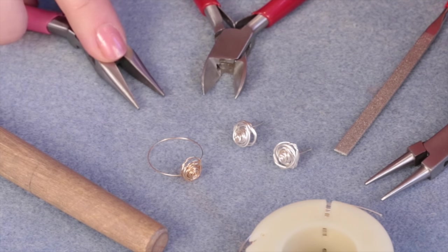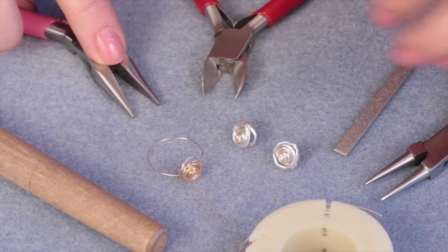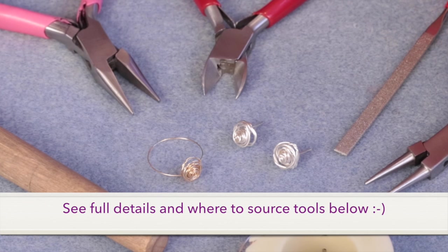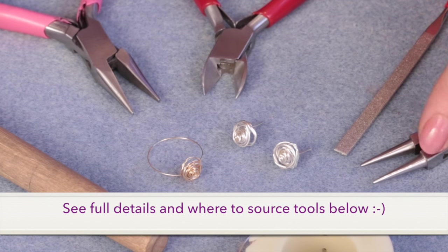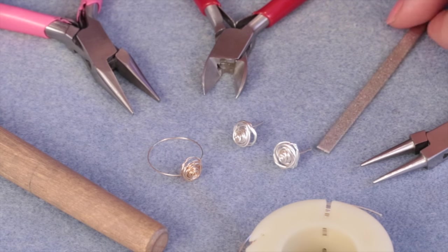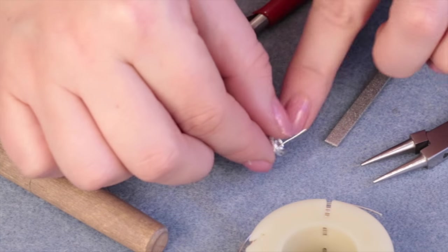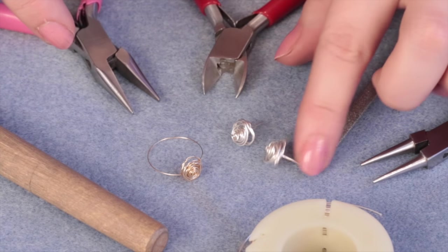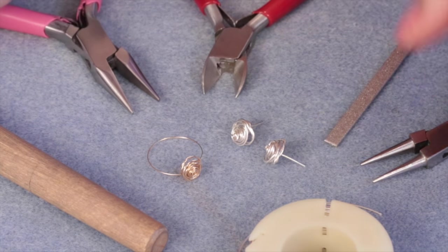We're going to be using our pliers, so I've got some chain nose pliers here, my side cutters for cutting the wire, some round nose pliers over here, and also I have a little needle file which is essential for making the ends of my stud earrings nice and smooth and neat.